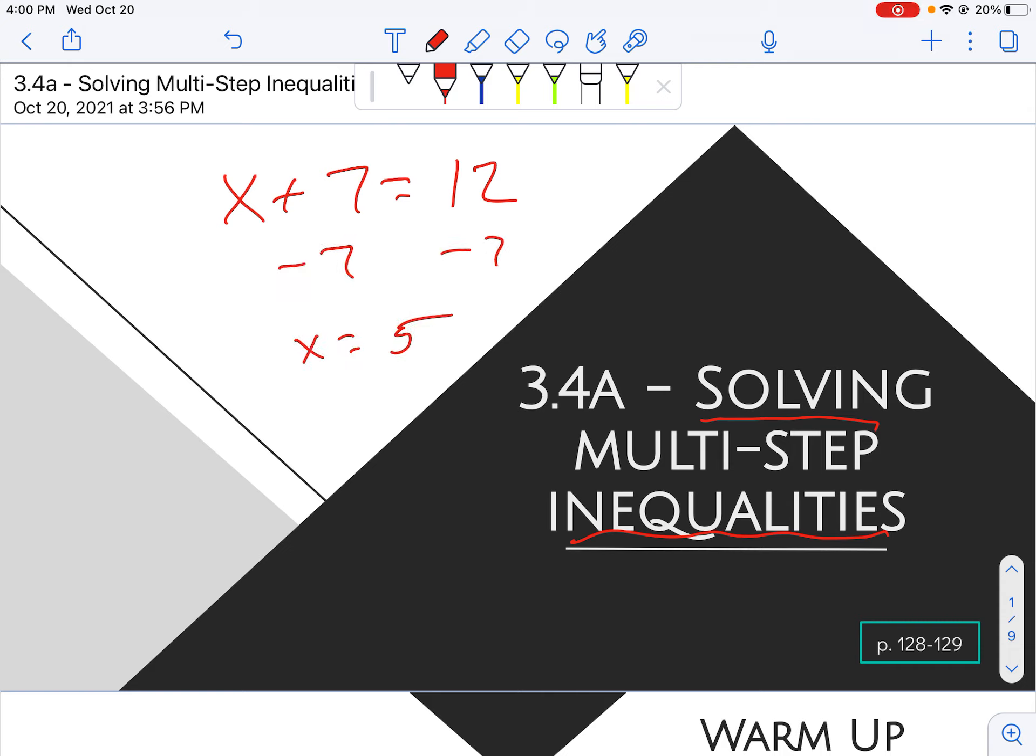If we had the inequality, x plus 7 is greater than 12, we would follow the same process. Subtract 7, and we would get 5. But instead of having an equal sign, we would just keep our inequality sign.